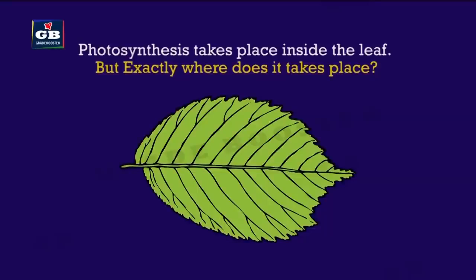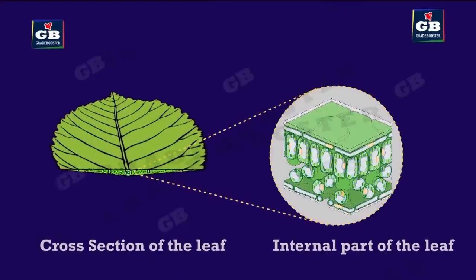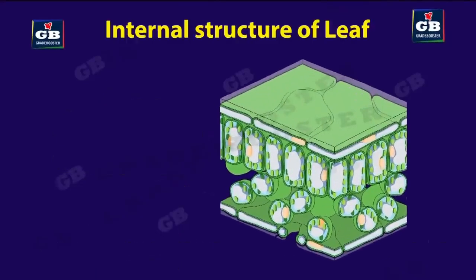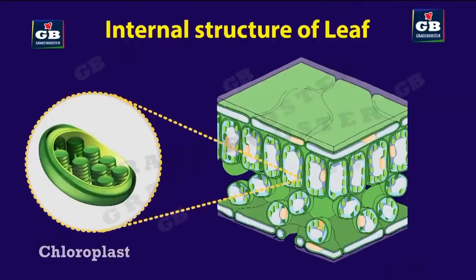Photosynthesis takes place inside the green leaves. If we look at the cross-section of any leaf under a microscope, we will be able to see green structures called chloroplasts. These are the structures in which photosynthesis takes place.